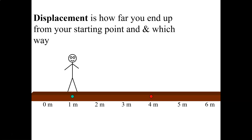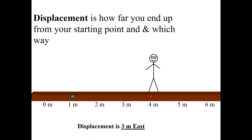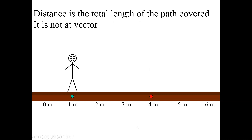We've covered speed and velocity, and now we want to go through the difference between distance and displacement. Displacement is how far you end up from where you started and the direction that you ended up — so it's how far and which way. Since it has a direction, displacement is a vector. The displacement here would be three meters east, which has both the magnitude — three meters — and the direction — east.